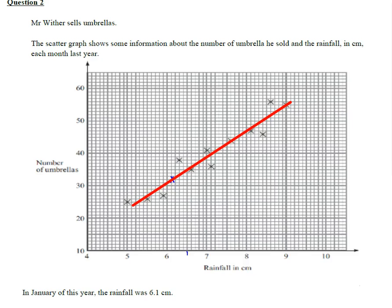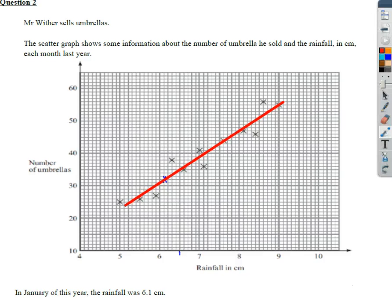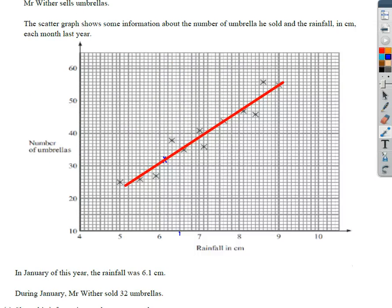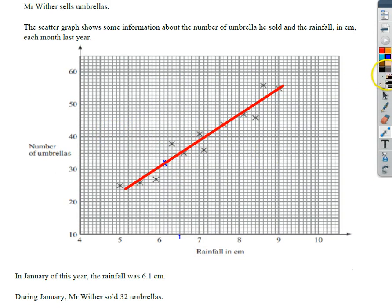But then I'm going to use it to go up, so the question said sold 40 umbrellas, so I'm going to go across from 40, let's make it a little bit smaller, I'm going to go across from 40 to my line of best fit, and then I'm going to come down from my line of best fit, straight down here, and it comes out 7.1.